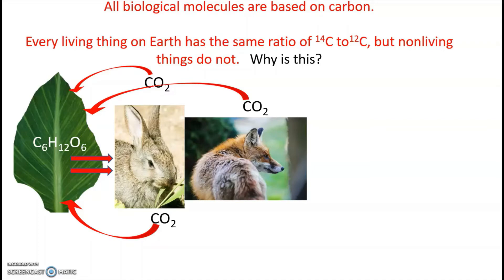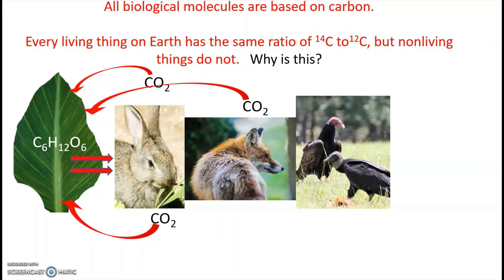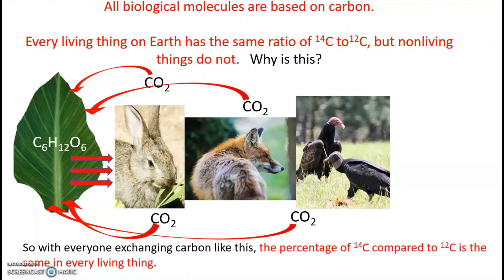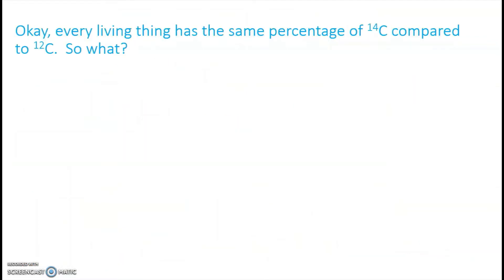It goes further — a fox has dinner with the rabbit, respires CO2, generating more plant material to feed more rabbits. There's also the transfer of carbon through waste. Decomposers — whether buzzards, vultures, or bacteria — generate more CO2 that goes back to the plants. With everybody exchanging carbon like this, the fraction of C-14 compared to C-12 ends up being the same in every living thing.